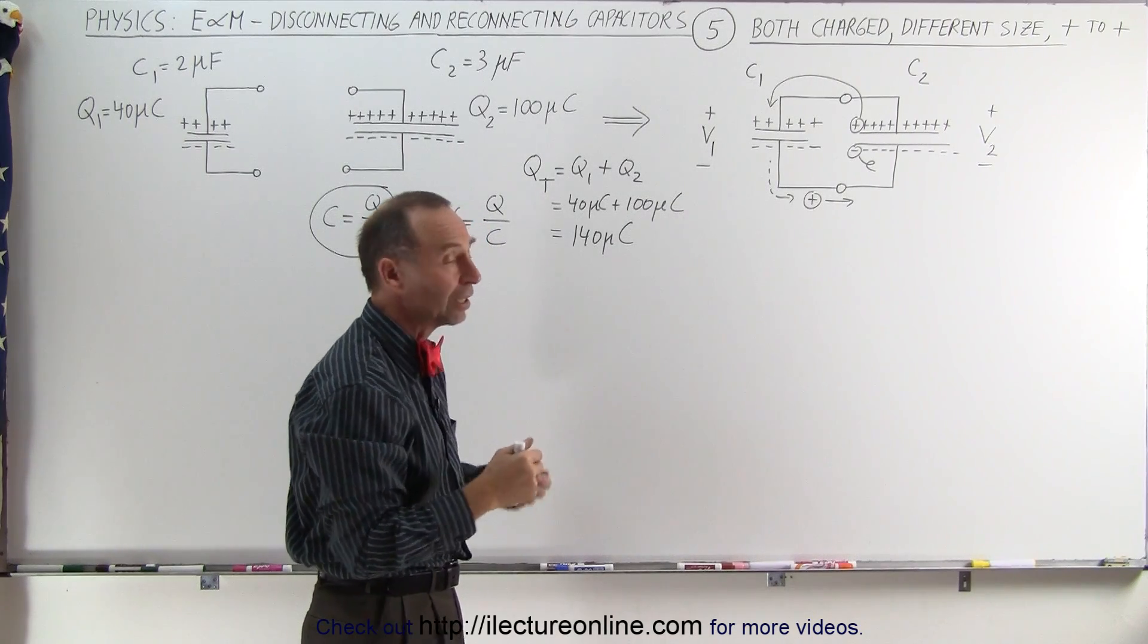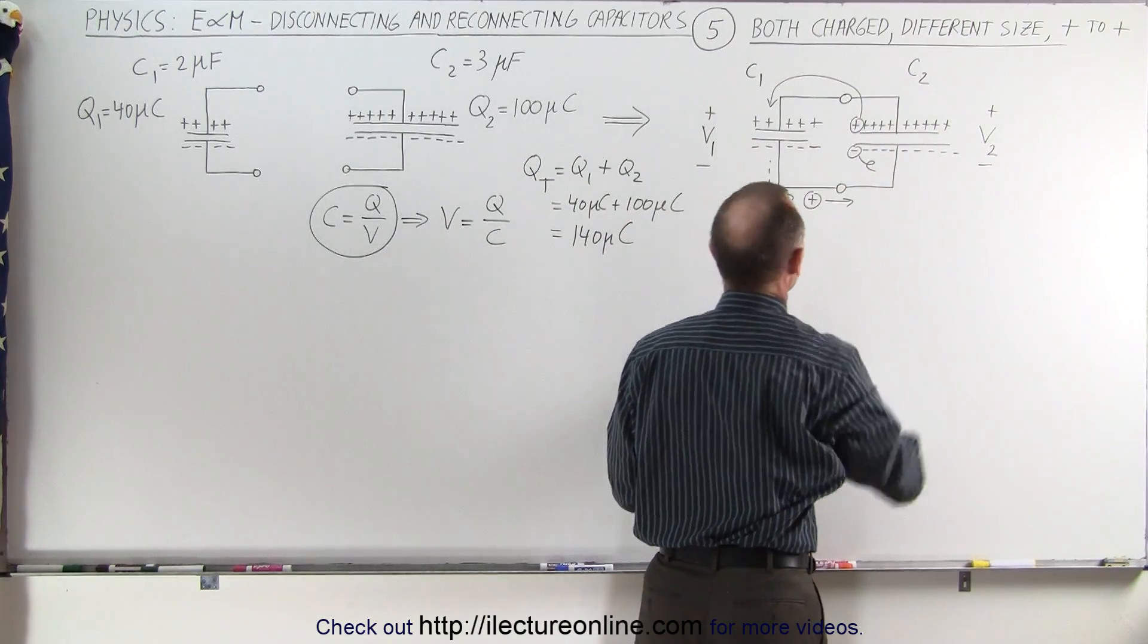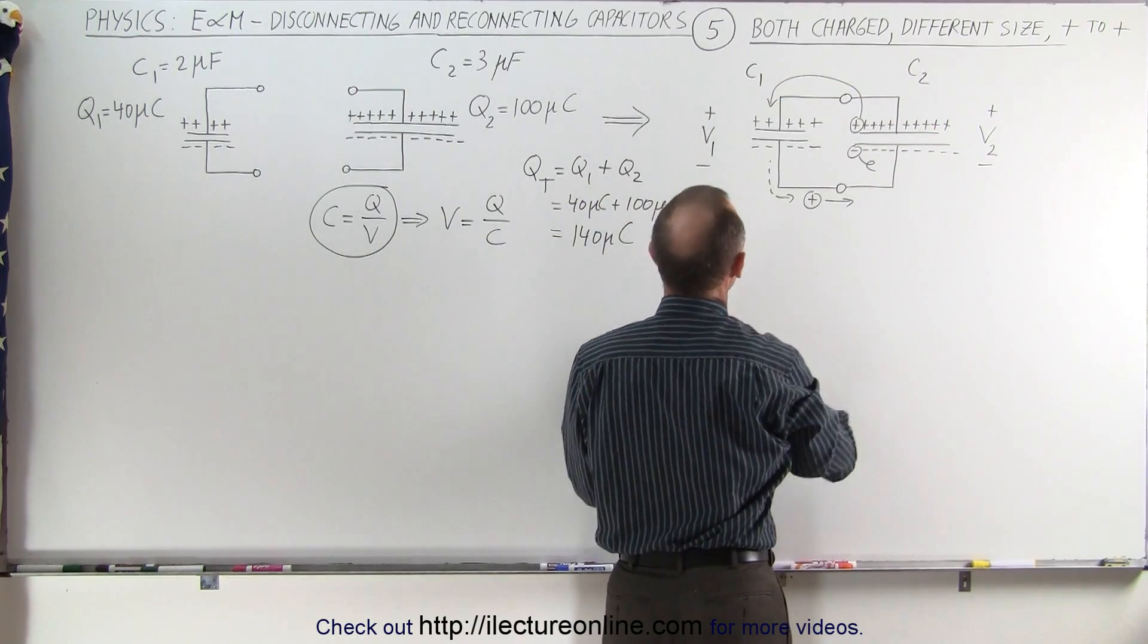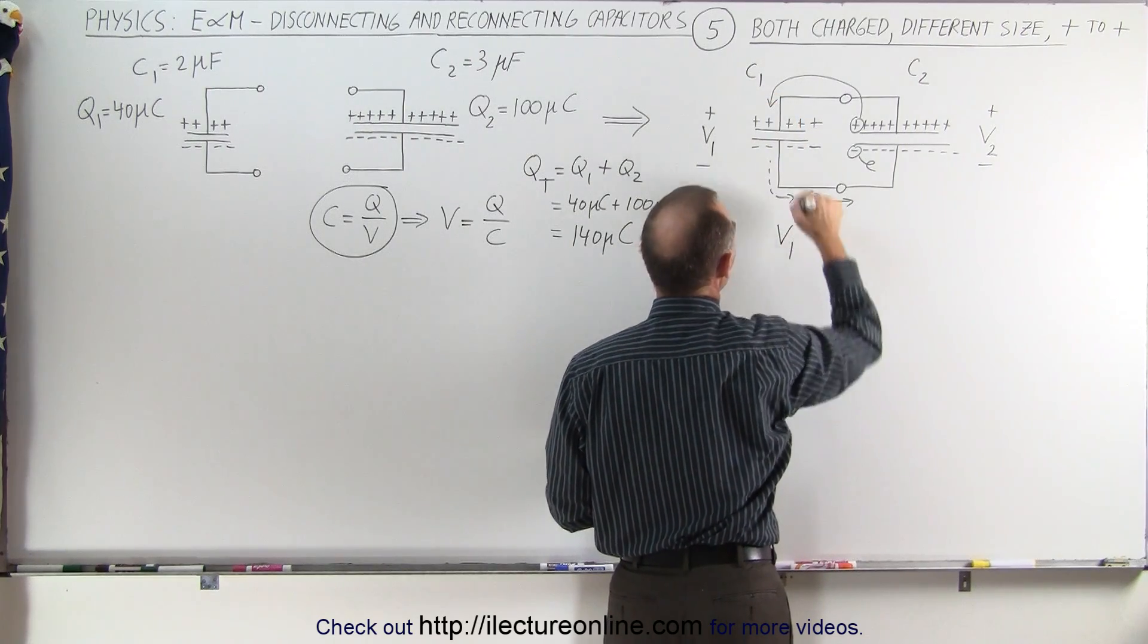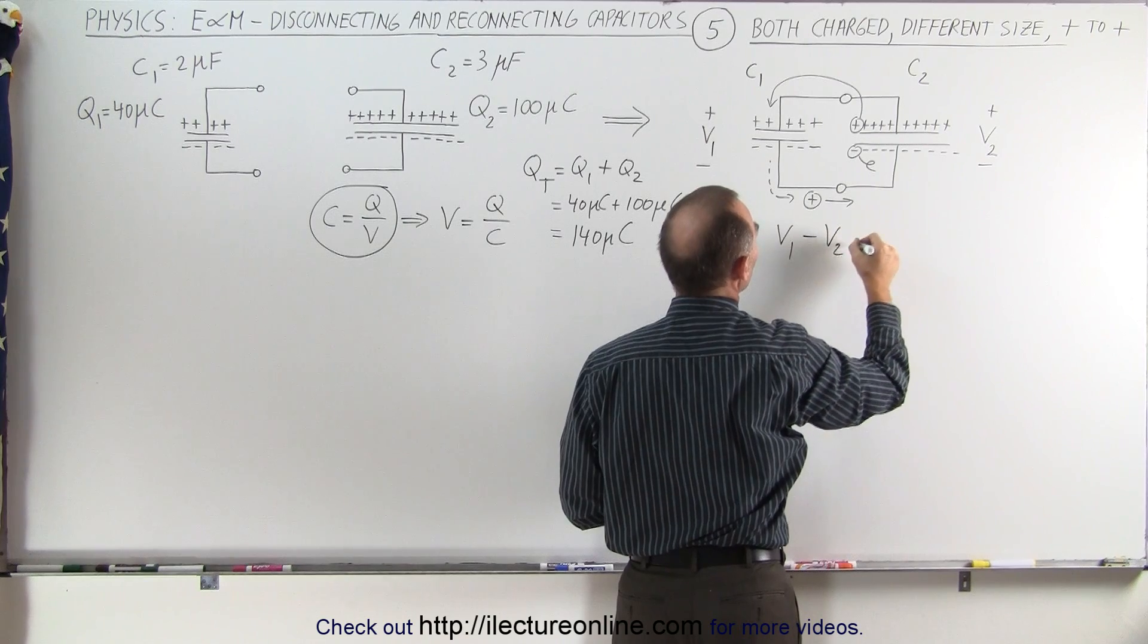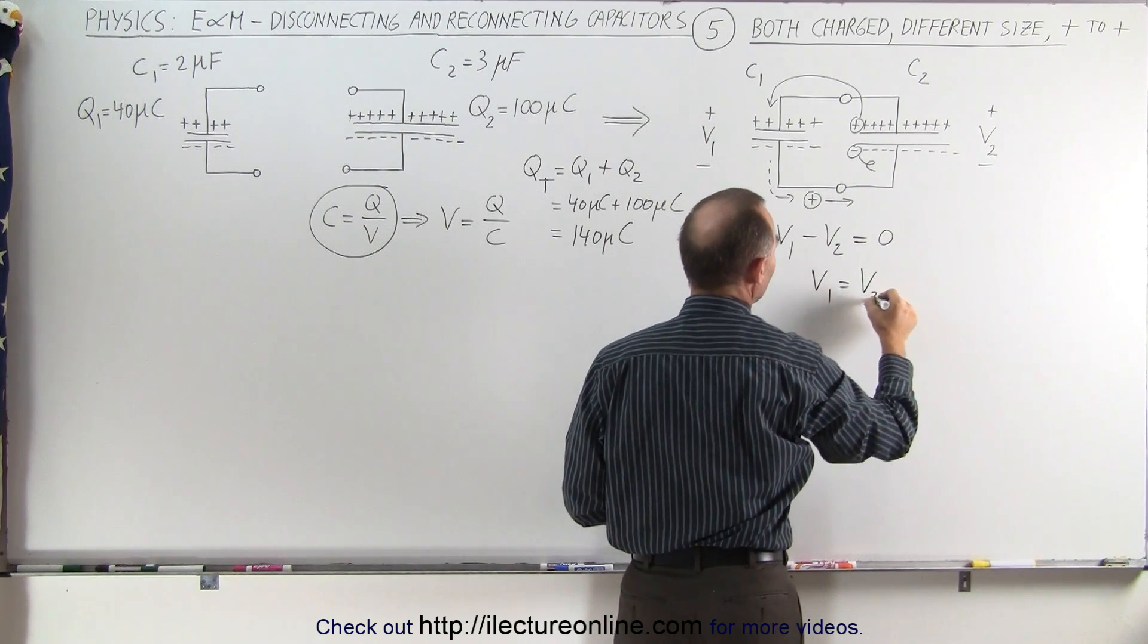The way we can reach an equilibrium is to determine what the total voltage is around the circuit. If we add up all the voltages together, we can say that going from here to there, that's a positive V1, going from there to there is minus V2, that should add up to zero, or V1 must equal V2.